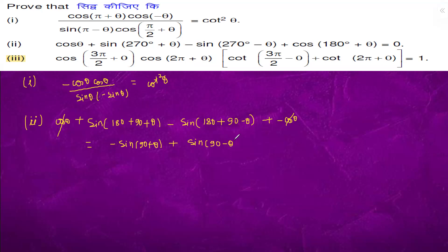sin(90° + θ) is -cos θ and sin(90° - θ) is cos θ, which equals zero. Question 3: this is cos(π + π/2 + θ).